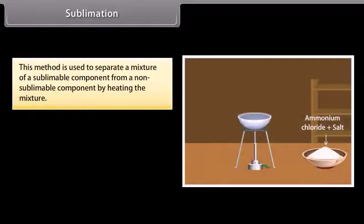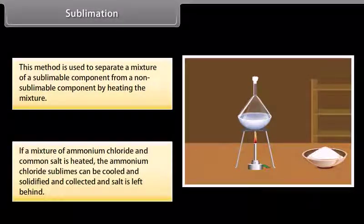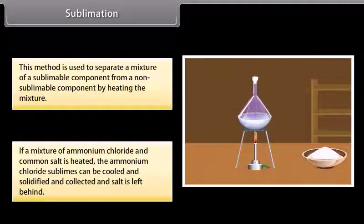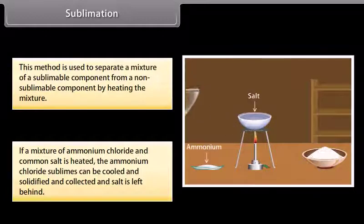Sublimation. This method is used to separate a mixture of sublimable component from a non-sublimable component by heating the mixture. If a mixture of ammonium chloride and common salt is heated, the ammonium chloride sublimes, can be cooled and solidified and collected, and salt is left behind.